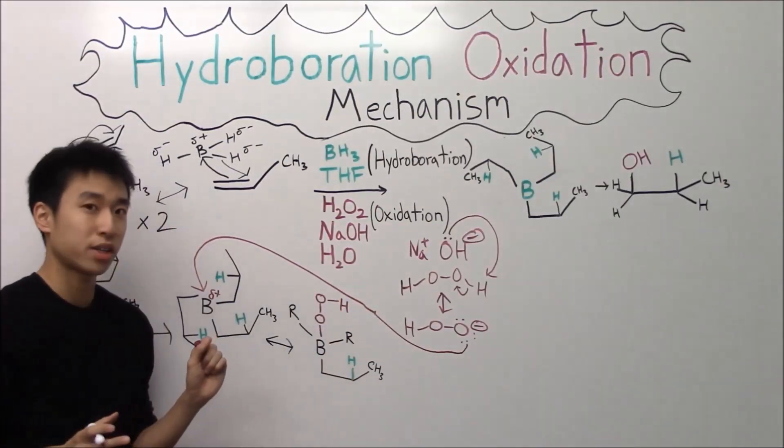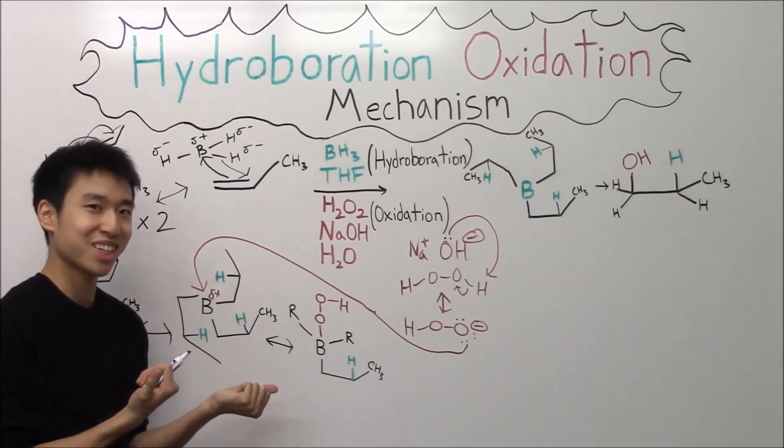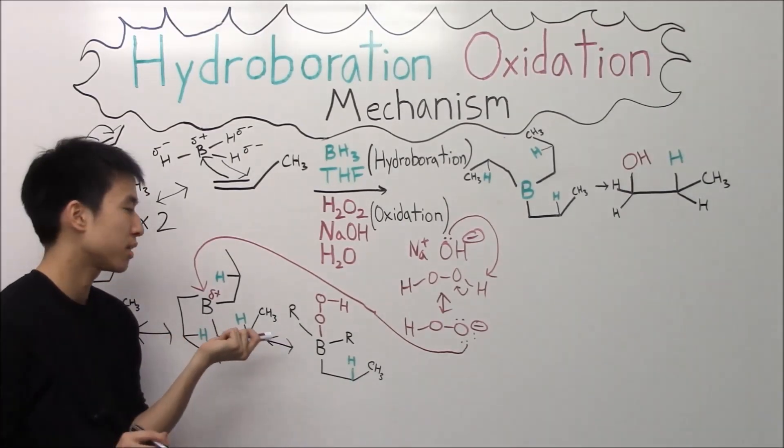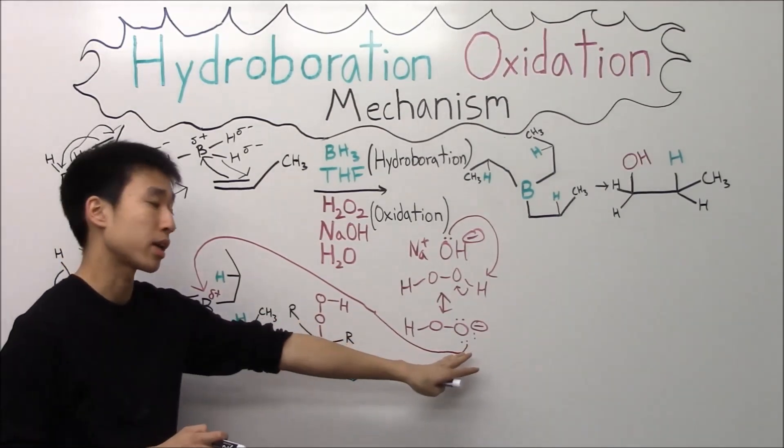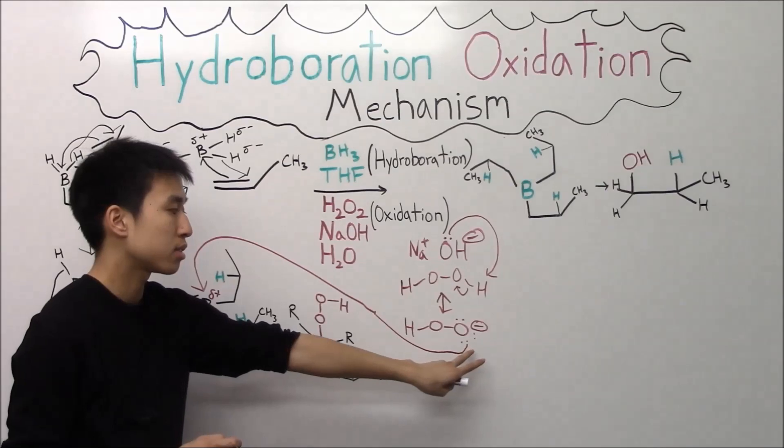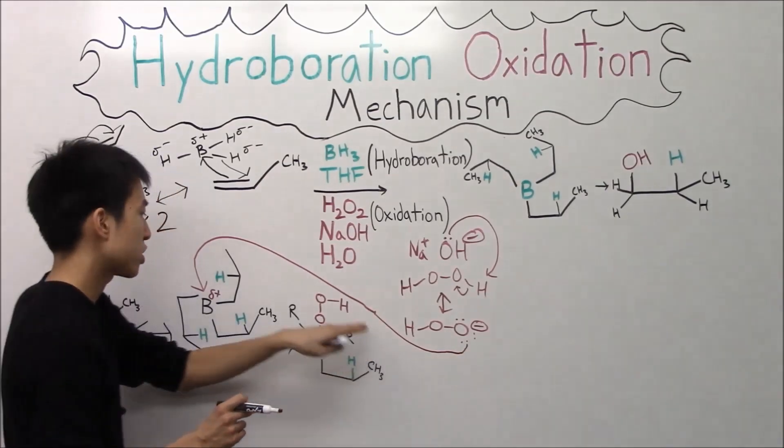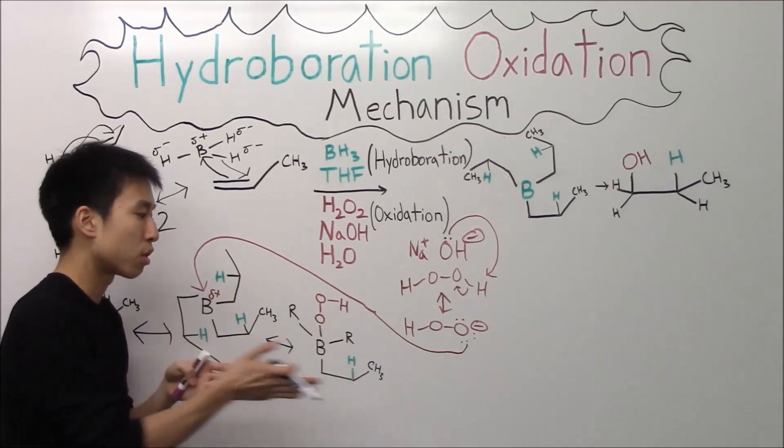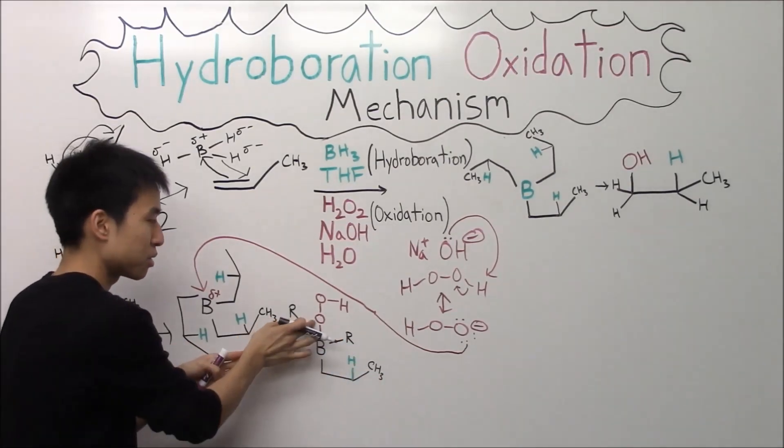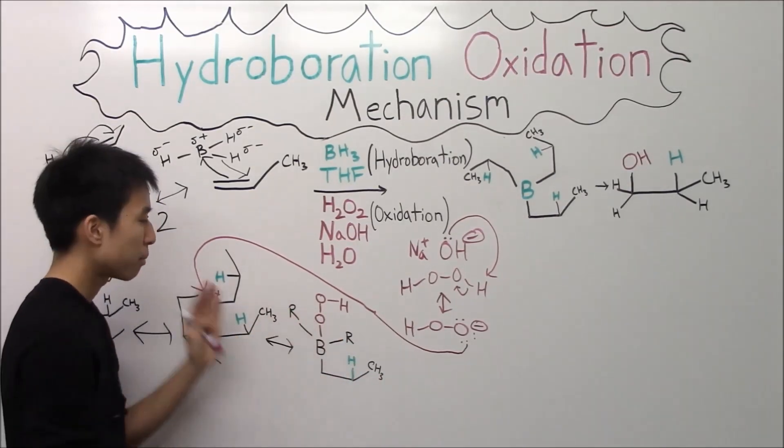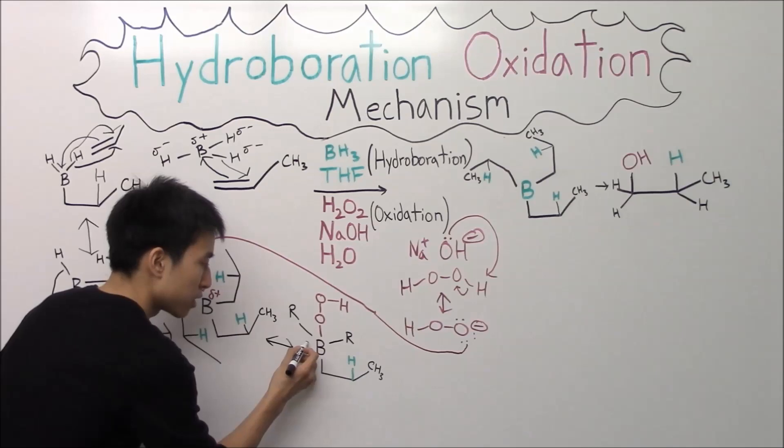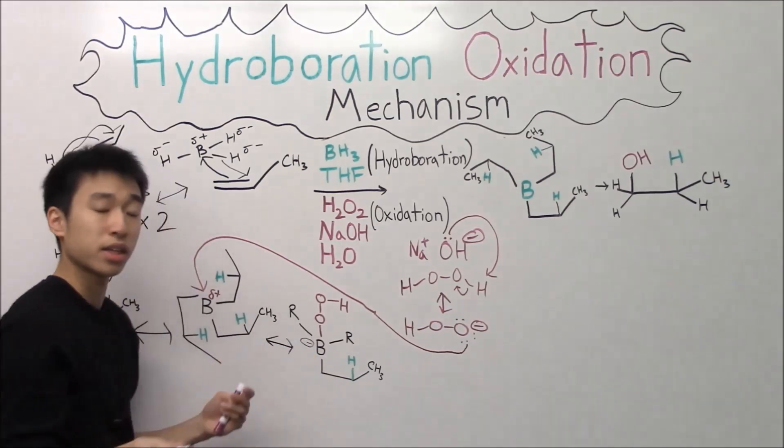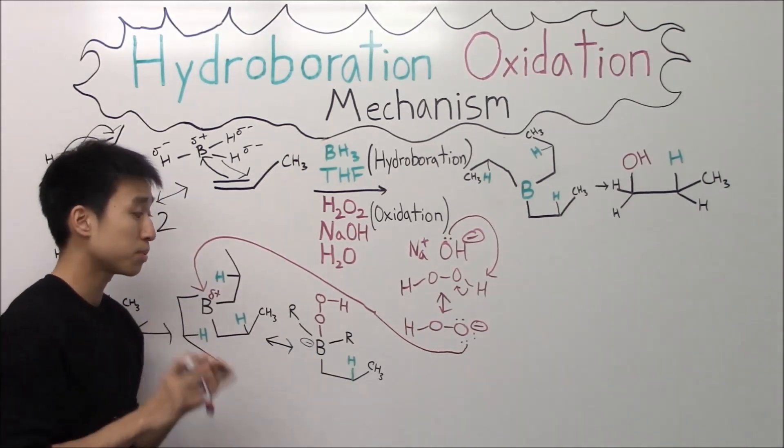Alright, so this is what I got. Did you guys get the same thing? The oxygen, first of all, it is supposed to be neutral. It's not supposed to be negative anymore because it took two of its electrons and shared it with the boron to form a friendly bond. So it's now neutral because it lost electrons. Boron actually gained electrons from oxygen, and it's now going to be negatively charged. So at this point here, I think this is the weirdest step.